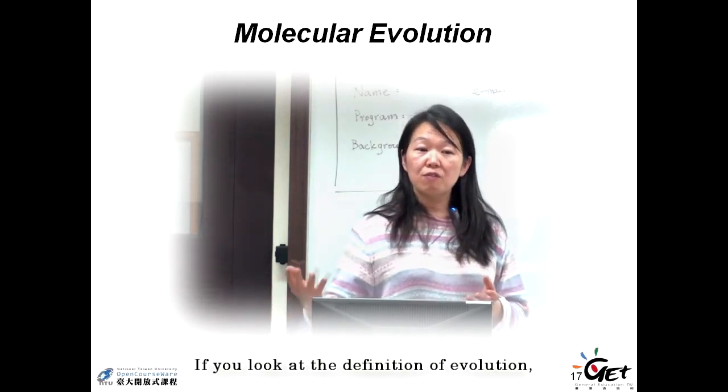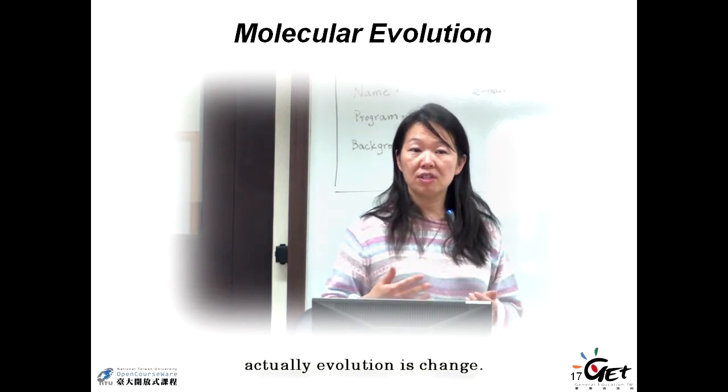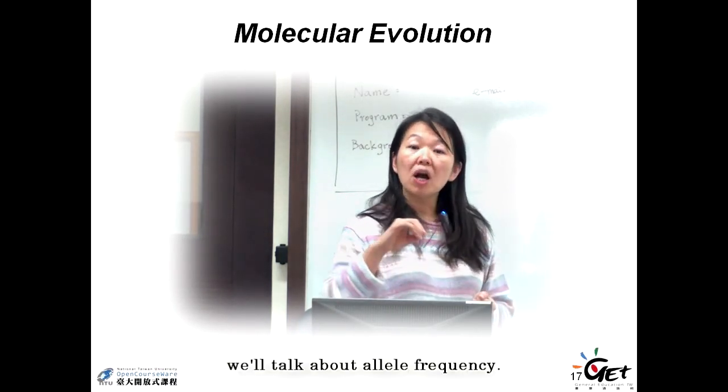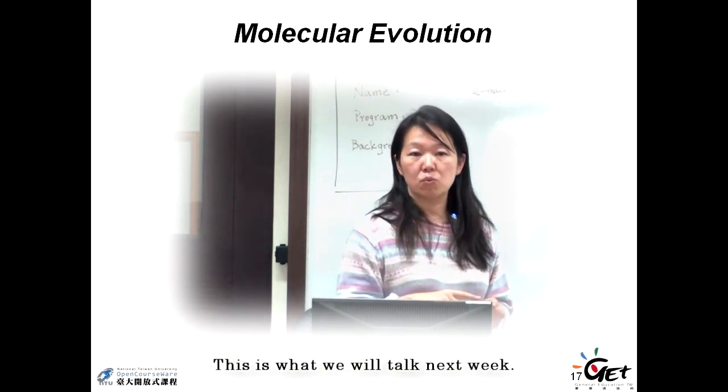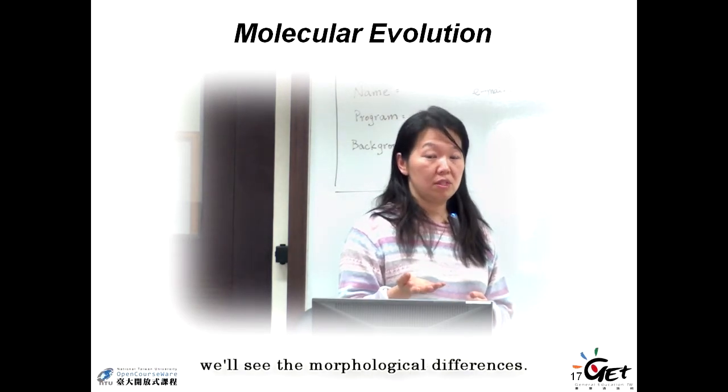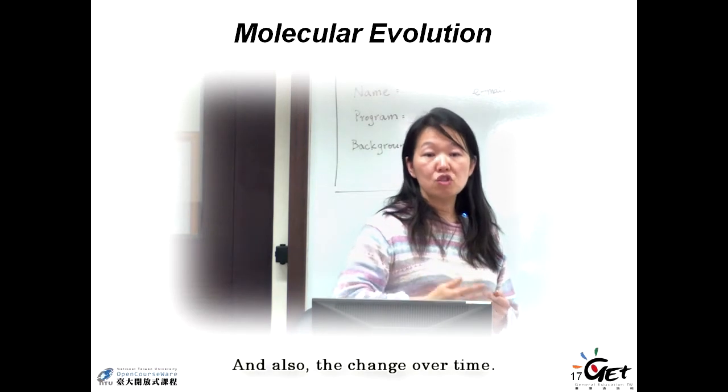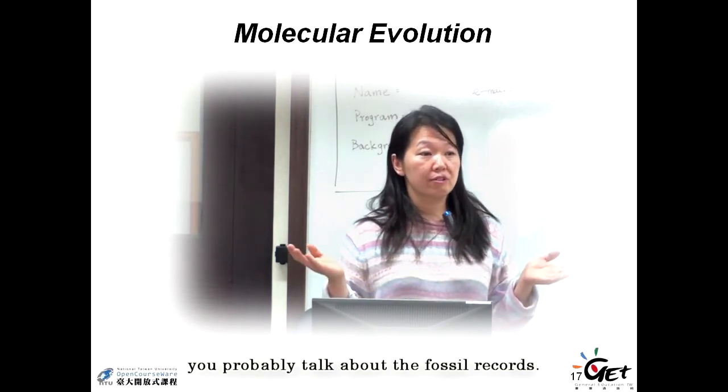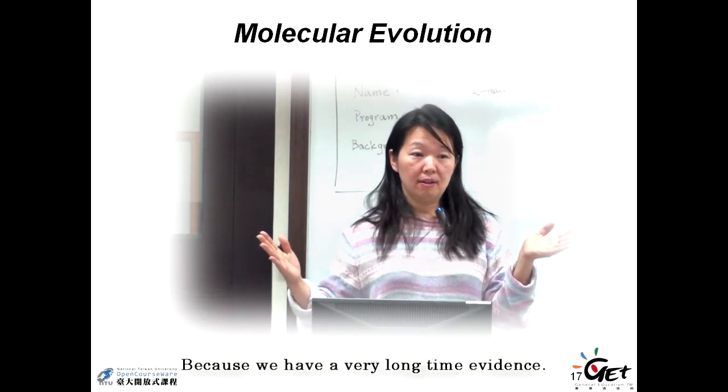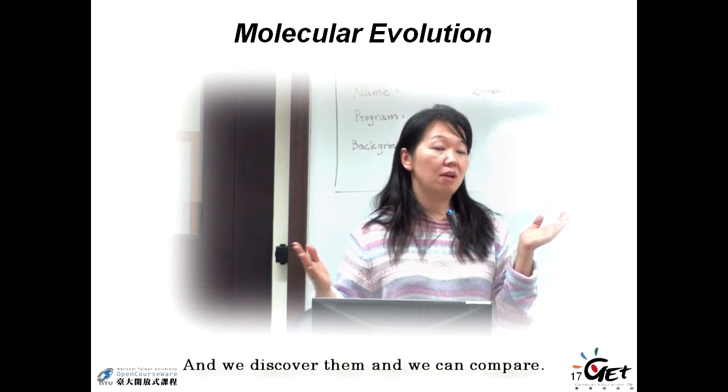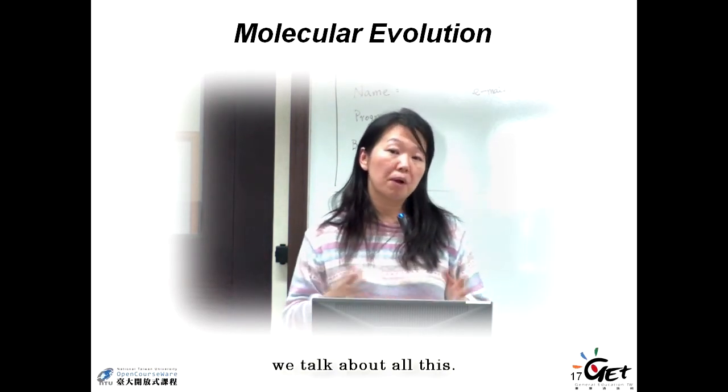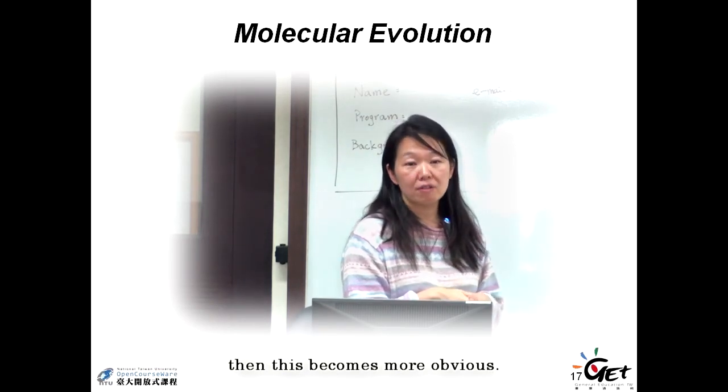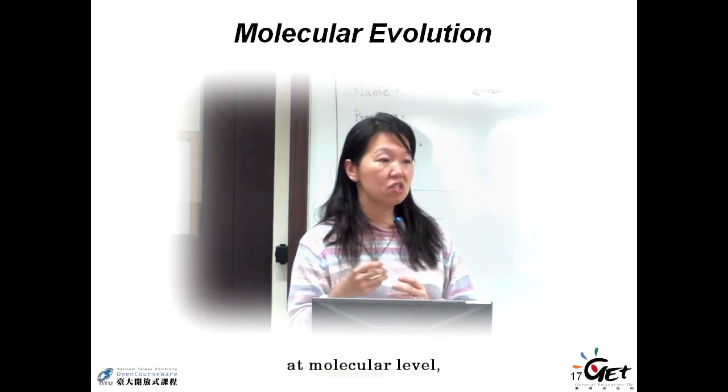Which is a very good definition. If you look at the definition of evolution, actually evolution is change. Something changes. If down to the genetic level, we'll talk about allele frequency. This is what we will talk about next week. At the organism level, we'll see the morphological differences and the change over time. More specifically in your evolution course, you probably talk about all the fossil records, because we have a very long time of evidence. We discover them and we can compare.